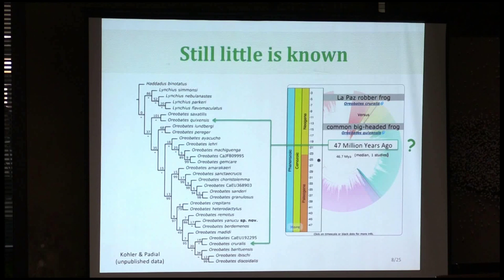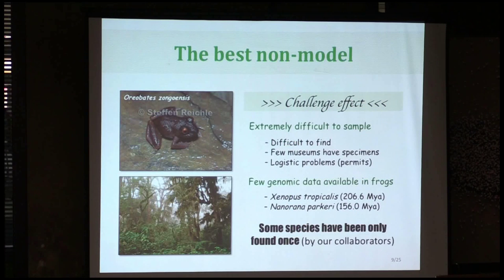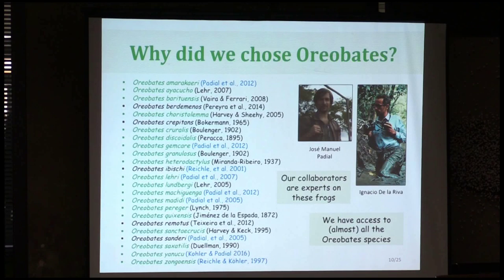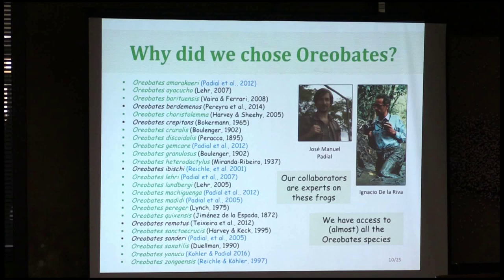What we want to do is understand what's going on with these species. We think this is one of the best non-model systems we could dream of, because some species have been described from only one specimen, and they are extremely difficult to find. Our collaborators have been working with this genus for the last 20 years. Most of the species shown in blue have been described by our collaborators, and in green you can see the samples we have available — something not many people in the world have access to for this genus.